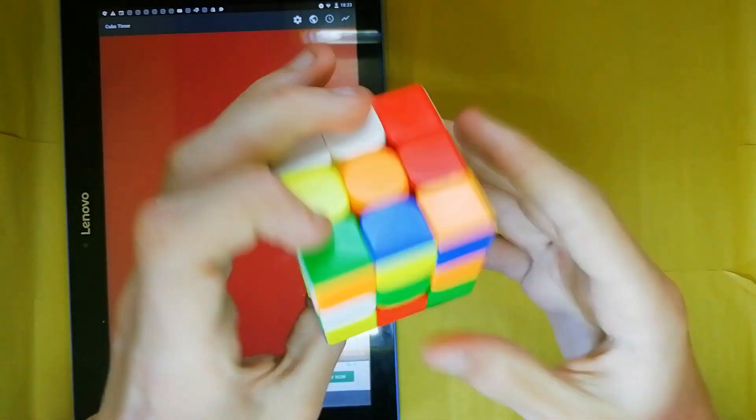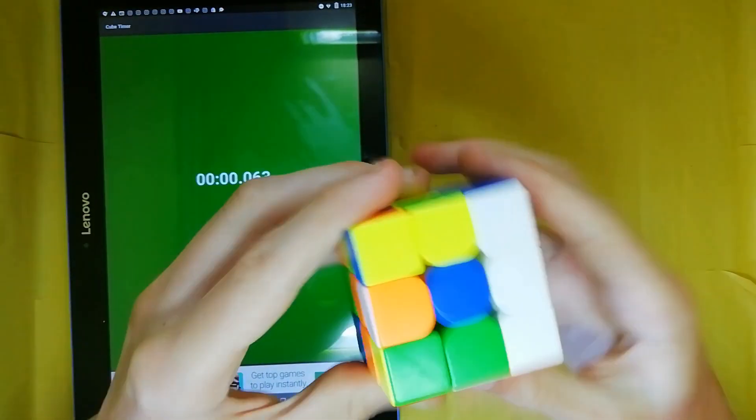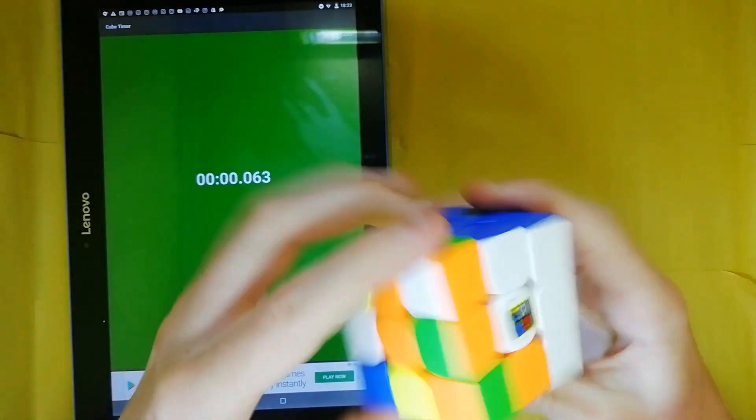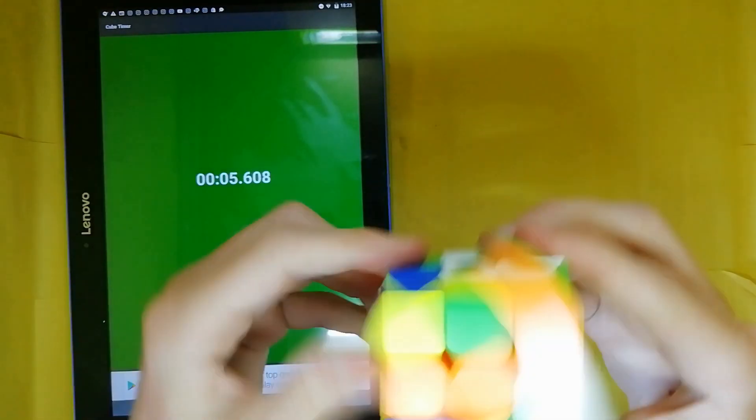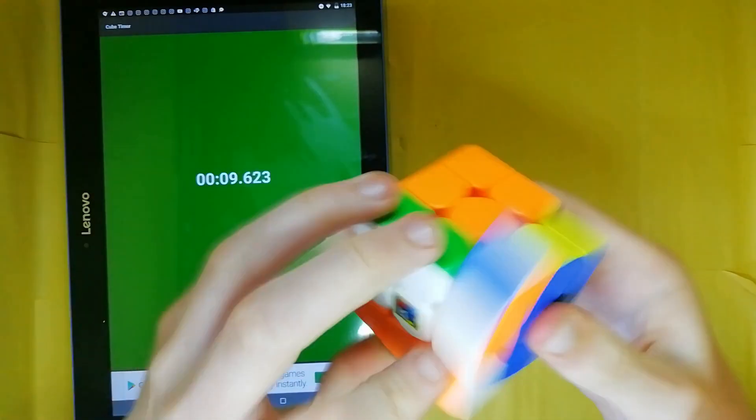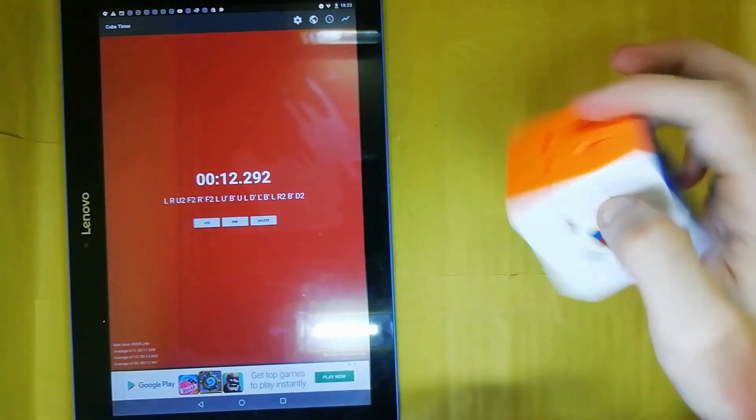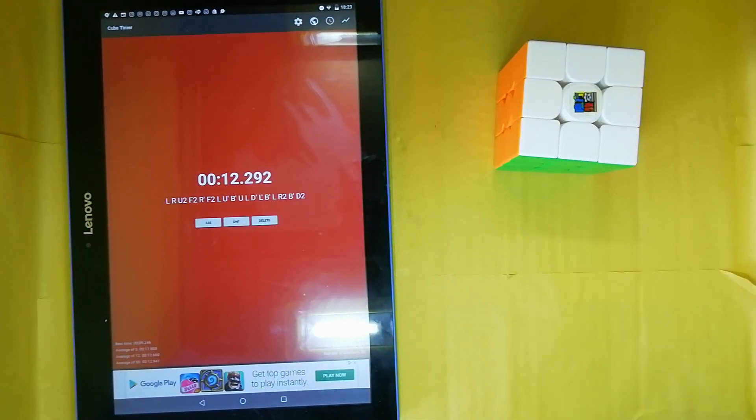As for this average of 5, it's 11.05, which may well be the fastest I've ever done an average of 5 in that situation. Trying to get the angle right for a video demonstrating a cube, which is interesting, definitely. You know, obviously we can't read too much into that, but it is pretty interesting.